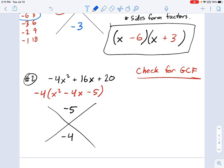And then I'm looking for two numbers that add up to negative 4, but multiply to negative 5. So things that multiply to negative 5 are not in big supply, right? Our choices are negative 5 and 1, or negative 1 and 5. And one of those adds up to negative 4. I think you can see it's going to be negative 5 and positive 1.